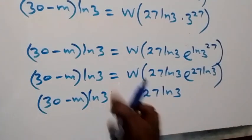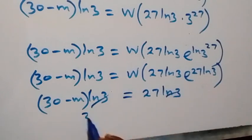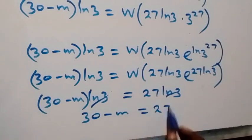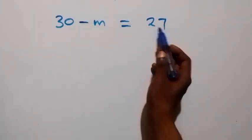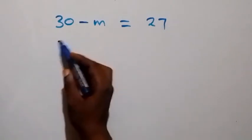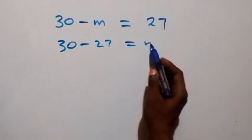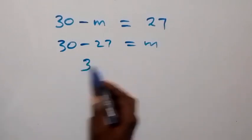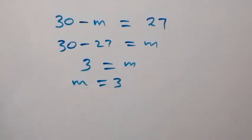Dividing both sides by ln 3, ln 3 cancels out and we have 30 minus m equals 27. Solving for m, we take minus m to the other side and 27 to the other side, giving us 30 minus 27 equals m.